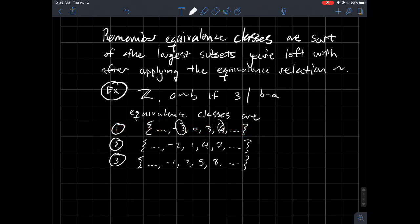and 3 divides 9. So that means that 6 and negative 3 are equivalent to each other. So they fall into the same category if you want to think of it that way. Similarly here, I'm saying that 7 and 1 are equivalent to each other because their difference 6 is divisible by 3.